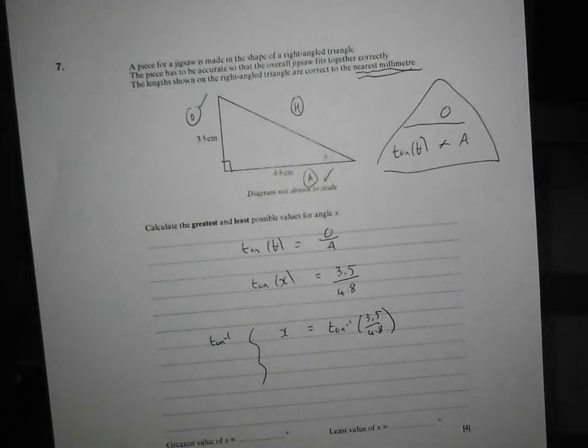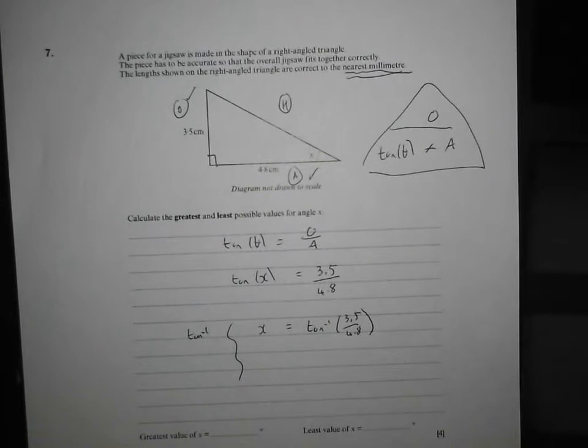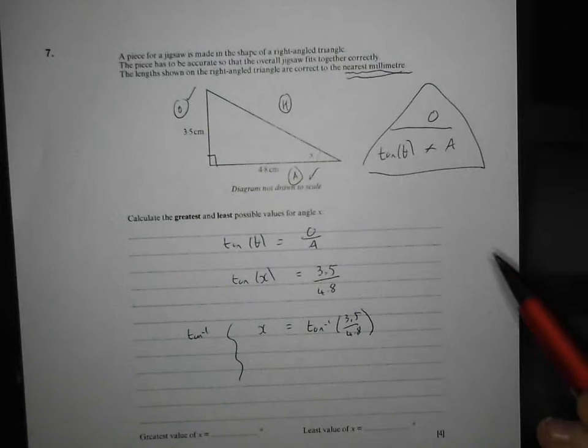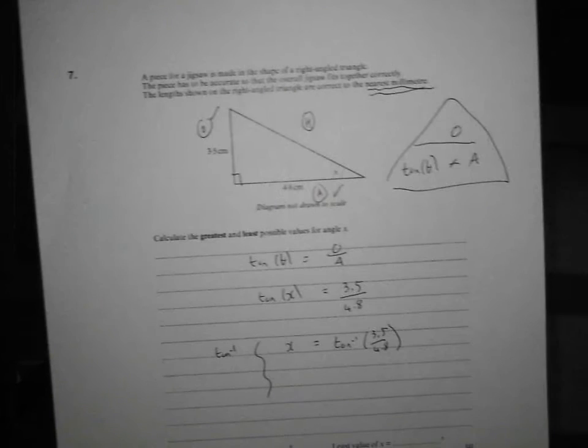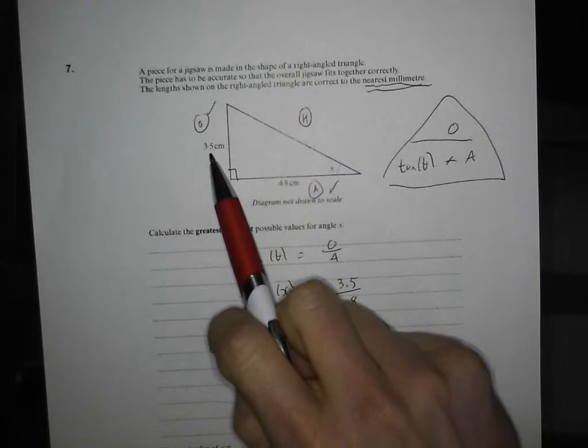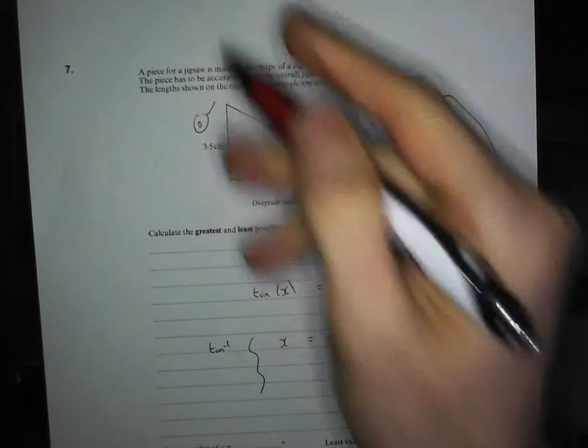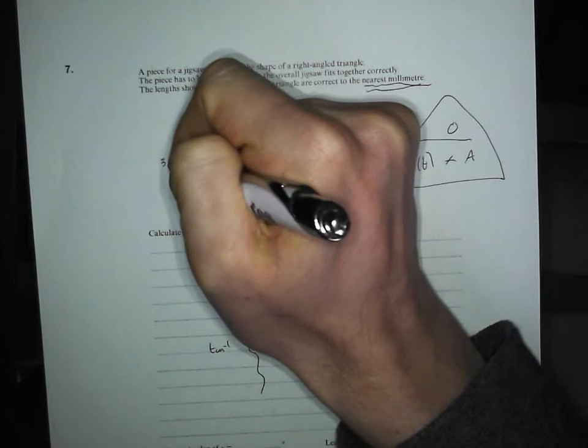Now that's all well and good, but at no point have we accounted for this nearest millimeter bit. So let's do that now. So what is the greatest and the smallest 3.5 can be? Well, there are 10 millimeters in a centimeter. So that is 3.5 to the nearest millimeter. If you go back to our work that we did on bounds, that was earlier on in this walking talking topic series.